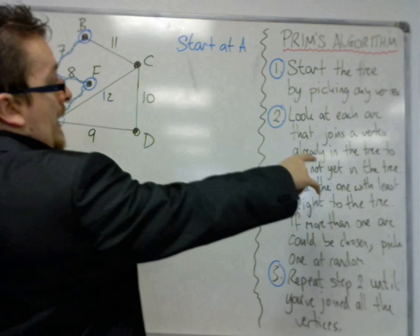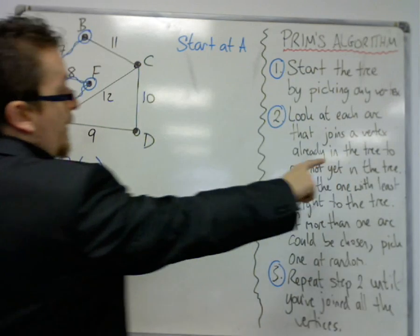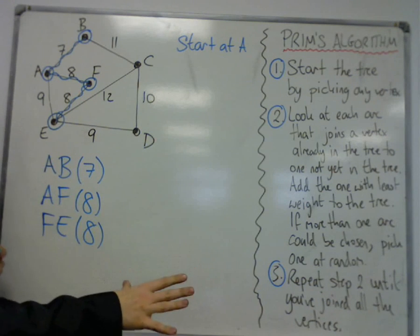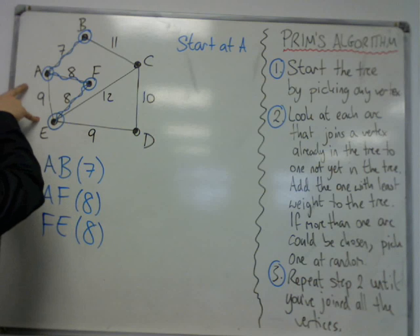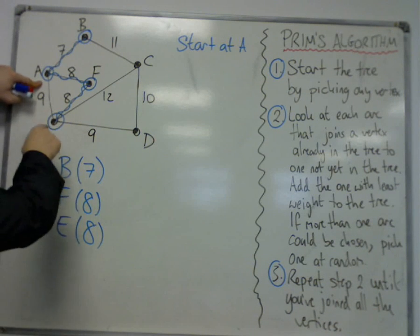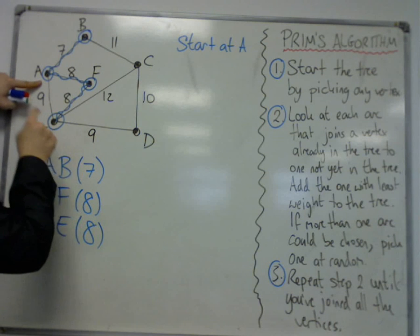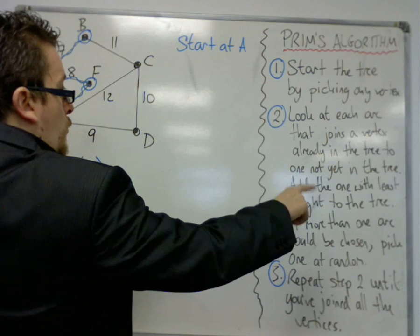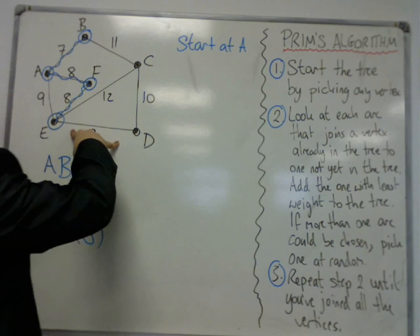So this is the part that says look at each arc that joins a vertex already in the tree to one not yet in the tree. So I wouldn't even look at A, E. It wouldn't just be a cycle, but that would be looking at an edge that would connect a vertex that's already in the tree. So add the one with least weight to the tree. So in this case, it's E, D.